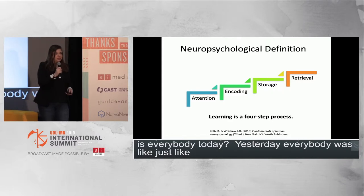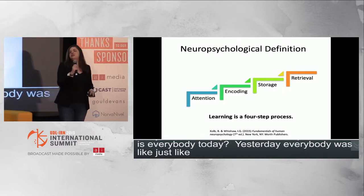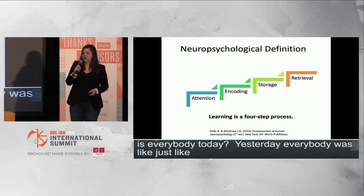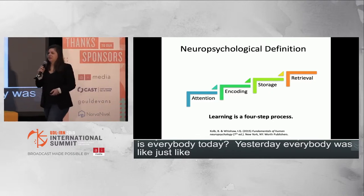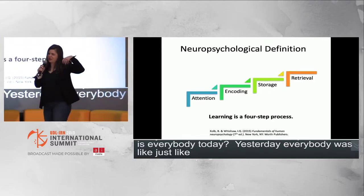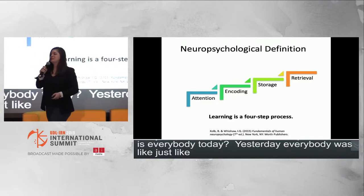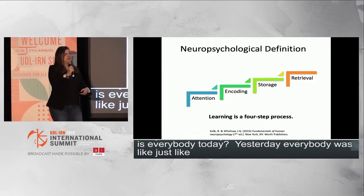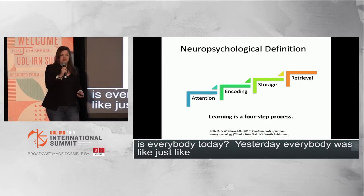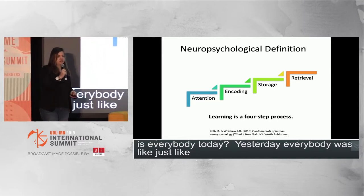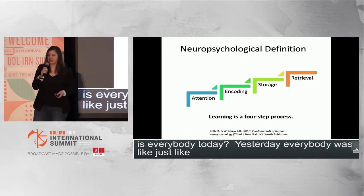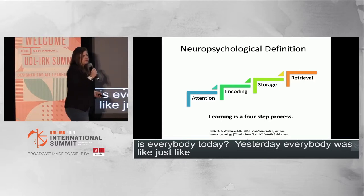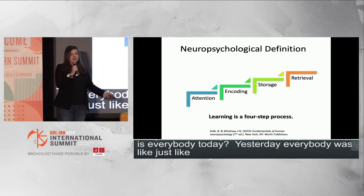From neuropsych texts, learning is a process — not one singular thing — and we can think of it as a four-step chain. First, you have to pay attention to something; nothing gets into the brain without you paying attention first. Next is encoding, or processing: your brain takes in the information, makes sense of it by connecting it to prior experiences and knowledge. Then your brain has to store that information, moving it into long-term memory. And finally, we don't know if learning occurred unless you retrieve it — purposefully and doing something with it.